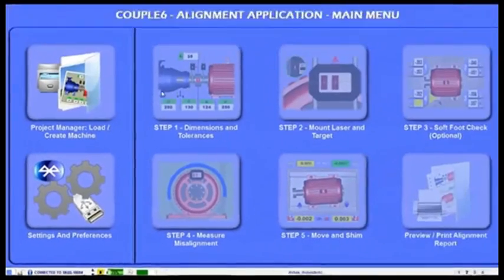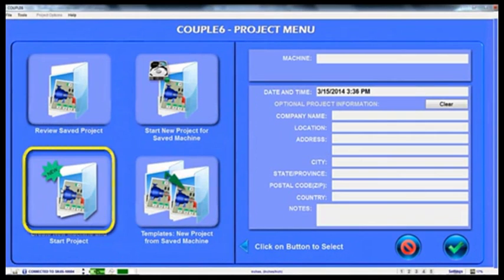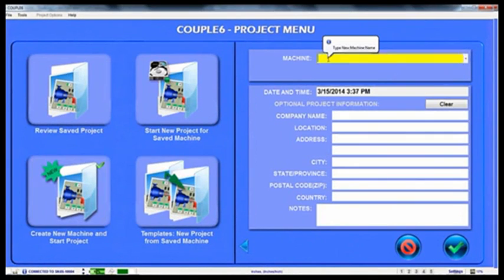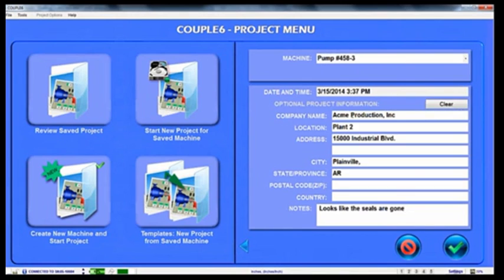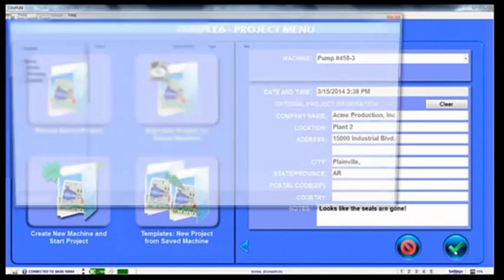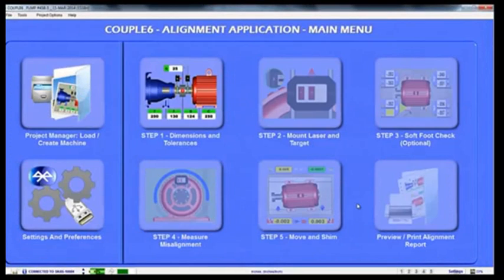To start a project, click on the project manager icon in the main menu. Then click on the create new machine icon and enter the machine name as well as the company name, address, and any notes for the project. This creates a standard windows folder for the machine and saves an emailable project file with a date and time stamp. This helps organize your machines and keeps track of alignment history.